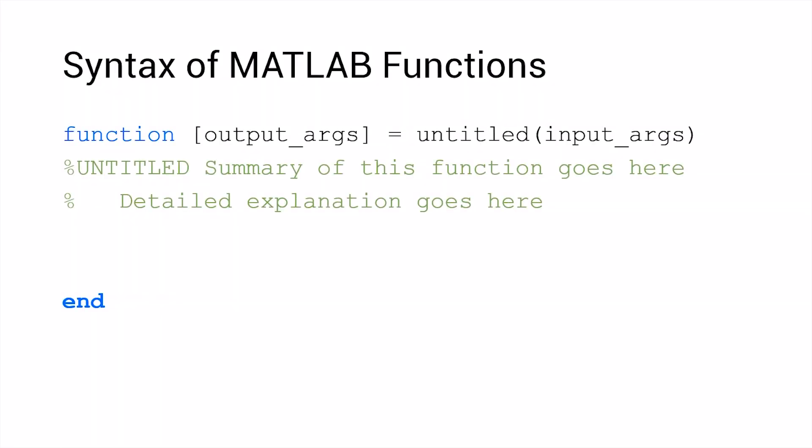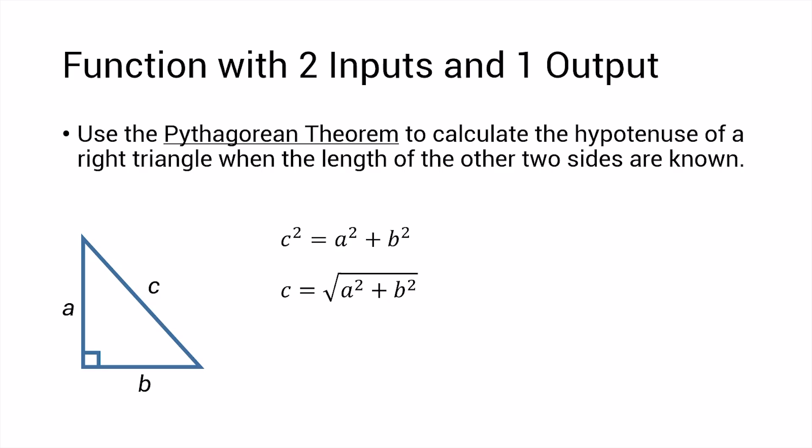So now let's take a look at the first example that we're going to work in MATLAB. We're going to use the Pythagorean theorem to calculate the hypotenuse of a right triangle when the length of the other two sides are known. In this case, our function is going to have two inputs and one output. The input arguments are going to be the length of side A and the length of side B, and the single output argument is going to be the hypotenuse C, which we're going to calculate based on the Pythagorean theorem. Let's move into MATLAB and implement this function.